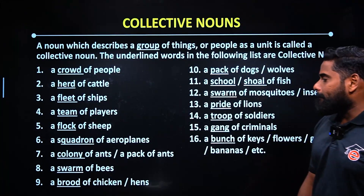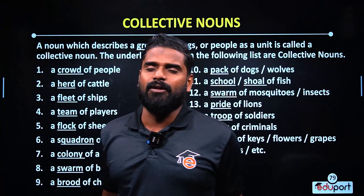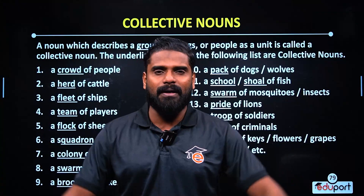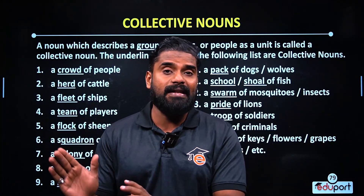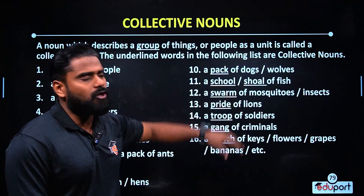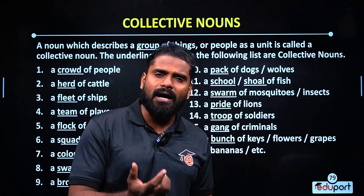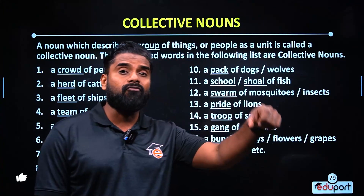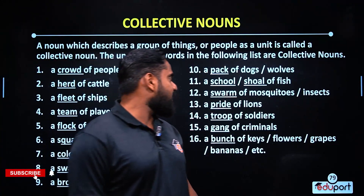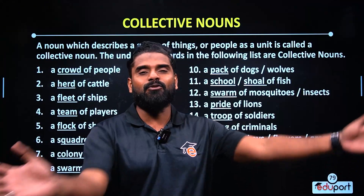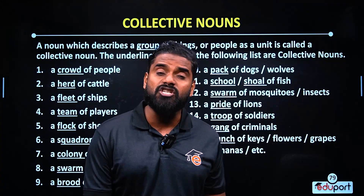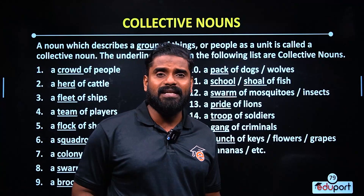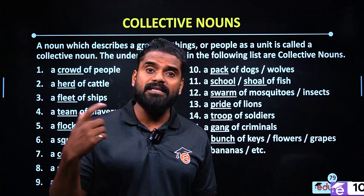A swarm of flies. A brood of chickens. A school of fish — fish travel in a school. A swarm of bees or mosquitoes — insects like bees travel in a swarm.